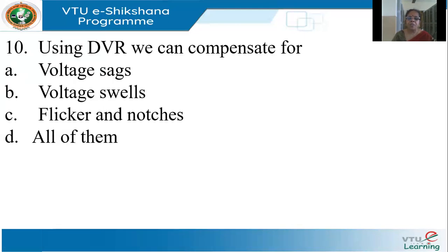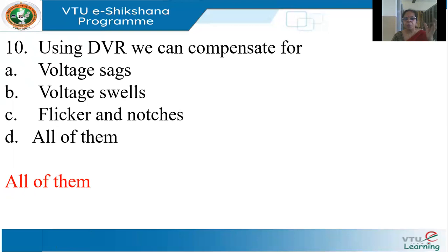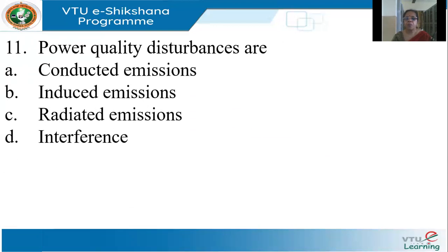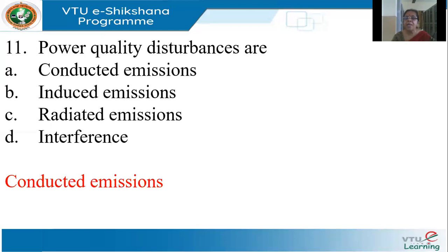Using a DVR, we can compensate for voltage sags, voltage swell, flicker, or notches — you can compensate for all of them. A DVR, or dynamic voltage restorer, is basically an inverter connected in series with the equipment, and it can compensate for any kind of voltage deviation. Power quality disturbances are conducted emissions because they flow through the system — they need a conducting medium — and are all low-frequency conducted emissions.